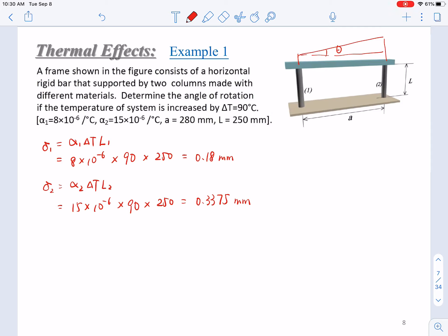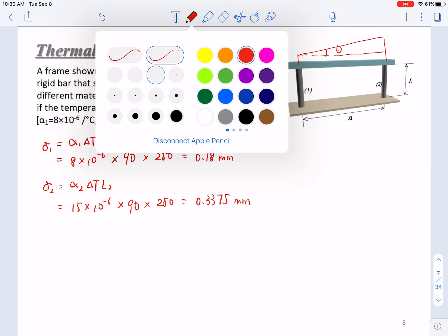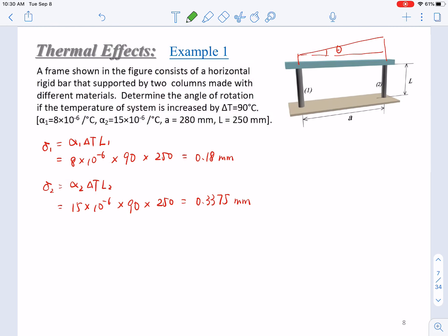Then we can calculate θ, this angle of rotation. In this triangle, we know that this side length is a. And what is the side length here? The side length here is just the difference between δ₂ and δ₁. So tangent θ equals what?